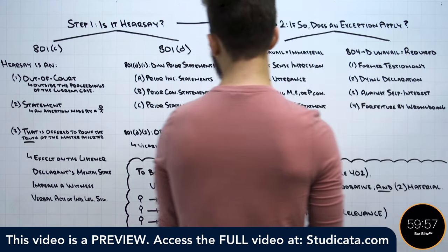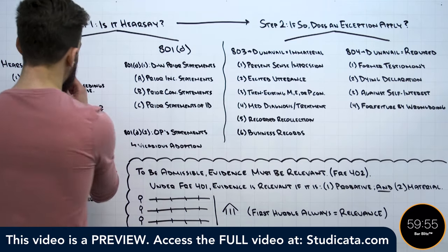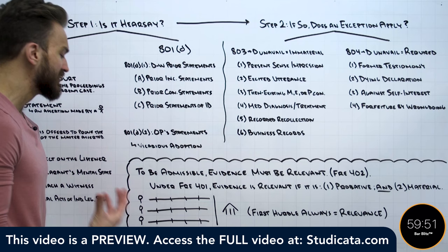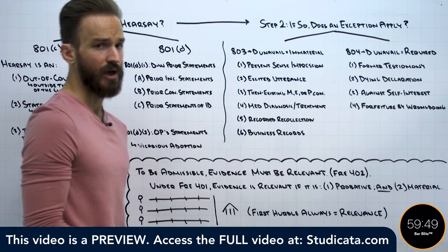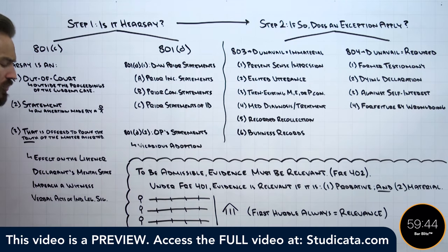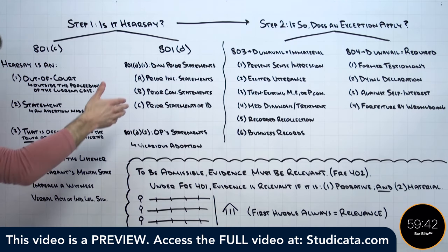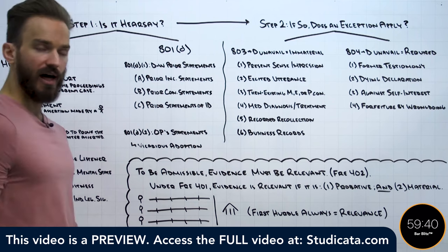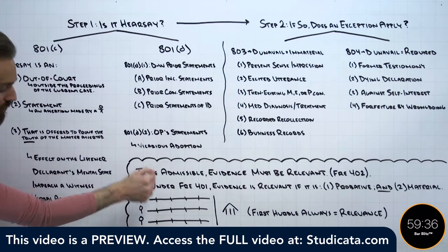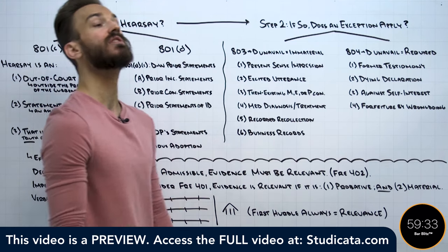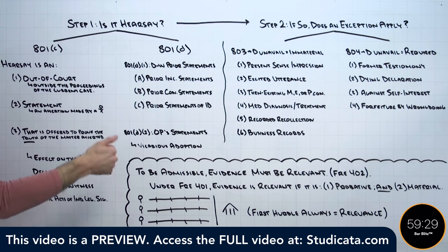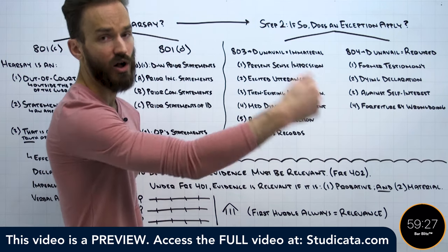The clock has officially started. We can just jump right into evidence. So big picture, I typically tell students to think about evidence on the bar exam kind of like hurdlers at a track meet. If you've never been to a track meet, no problem. Hurdles is pretty straightforward — the runners line up on the starting line and then prior to the race beginning, barriers are placed on the track. This is what makes hurdles unique as an event at a track meet.